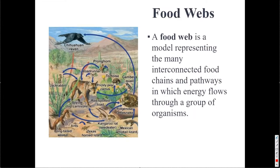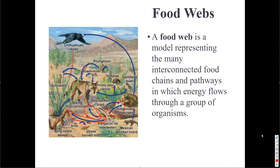Food webs expand on the concept of a food chain. Rather than one arrow leading from the creature being consumed to another, we have multiple food chains connected together. For example, the kangaroo rat is the bottom herbivore which eats seeds, and then the kangaroo rat is eaten by the coyote — as shown by this arrow. But the kangaroo rat could also be eaten by the weasel, and they can be eaten by the rattlesnake. So there are multiple predators for the same prey. Also, the coyote is not limited to the kangaroo rat — it's able to eat the kangaroo rat, the gambel's quail, a roadrunner, and even a jackrabbit.